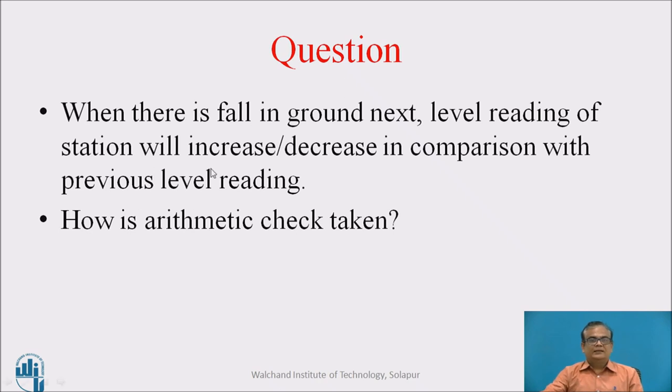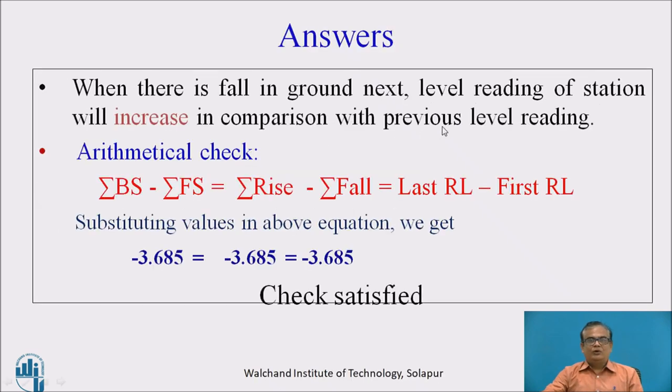So, what are the answers? When there is fall in ground next, there will be increase in comparison with previous level reading. And what is the arithmetic check? Sigma backside minus sigma foresight is equal to sigma rise minus sigma fall is equal to last RL minus first RL. And substituting values in this, we get our check satisfied. There is no need of any revision in the calculations.